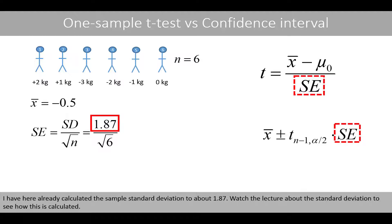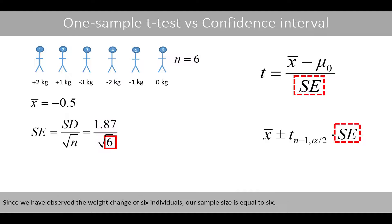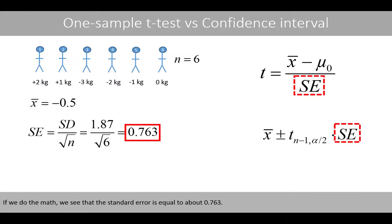Watch the lecture about the standard deviation to see how this is calculated. Since we have observed the weight change of six individuals, our sample size is equal to 6. If we do the math, we see that the standard error is equal to about 0.763.